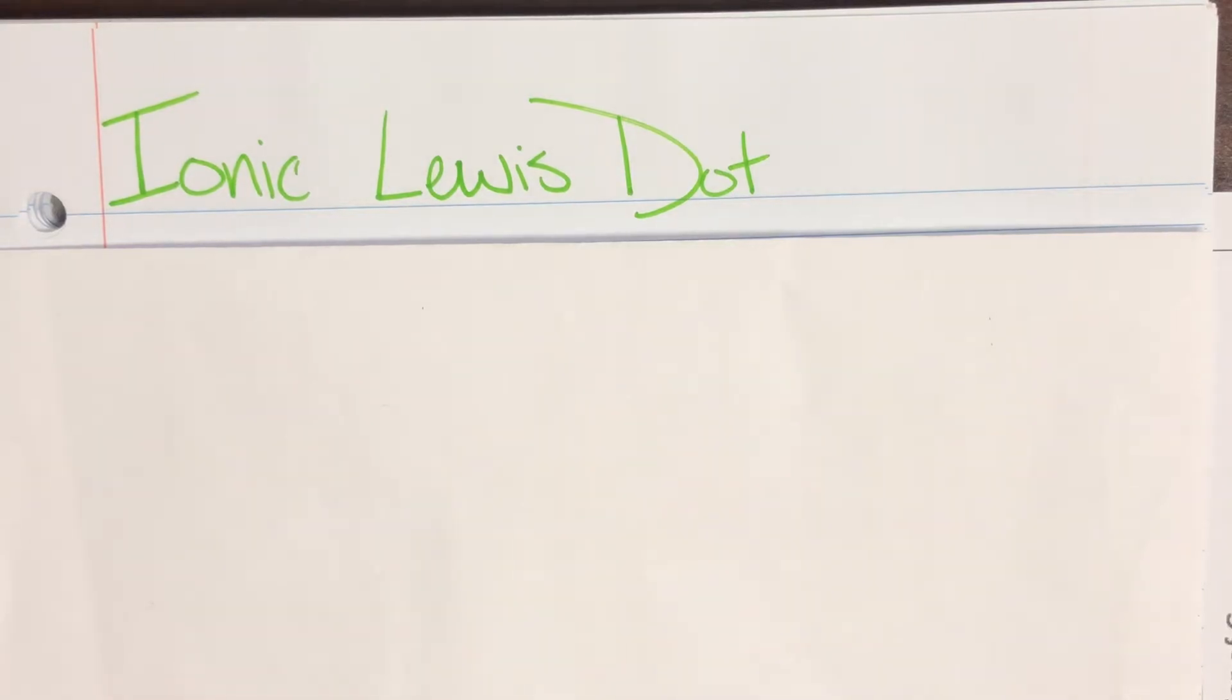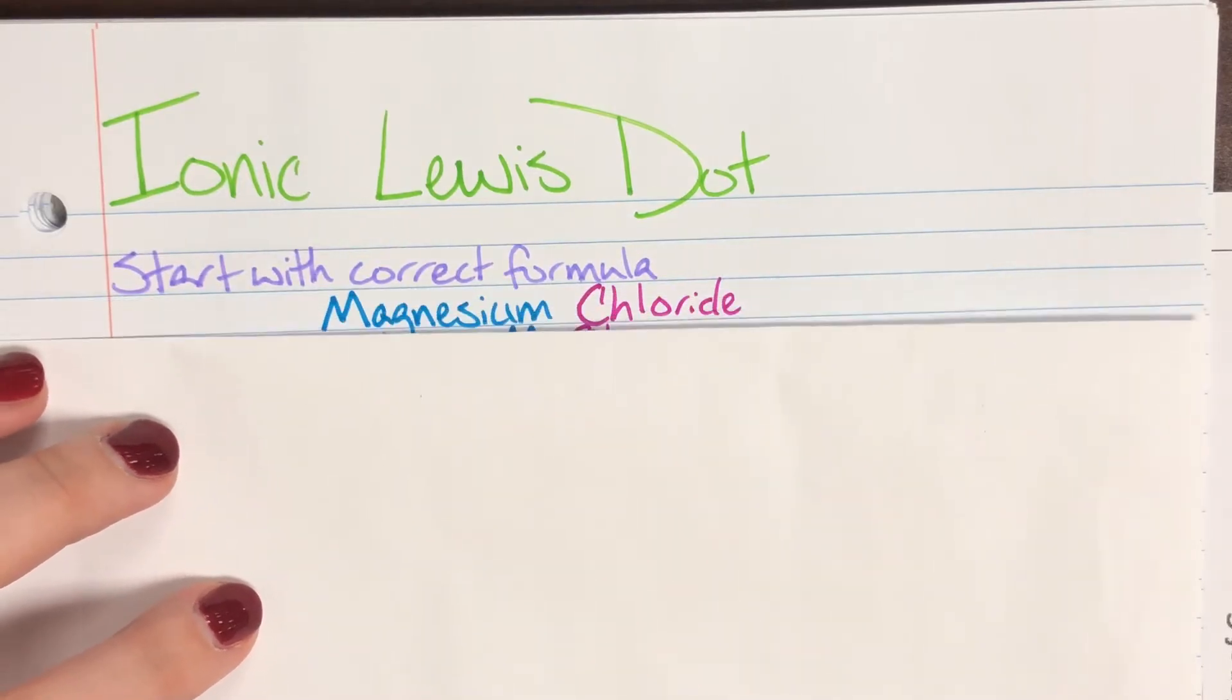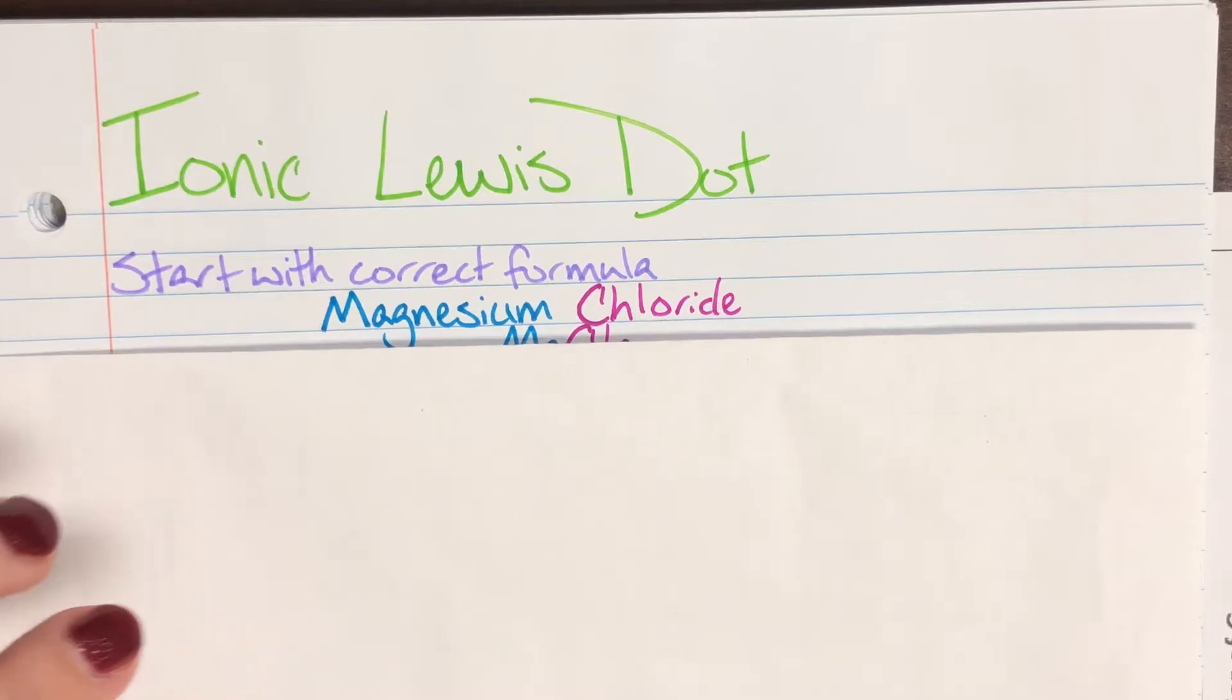Today we're going to be talking about ionic Lewis dot structures. And just like with any other compound, I must start with my correct formula. So we'll go ahead and we'll look at this compound, magnesium chloride.